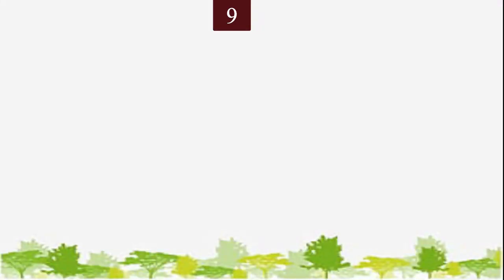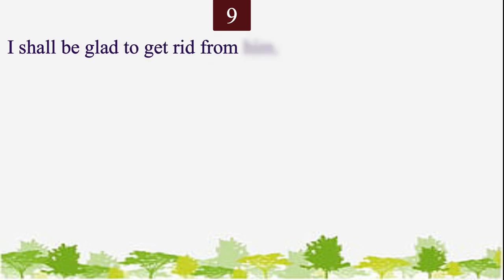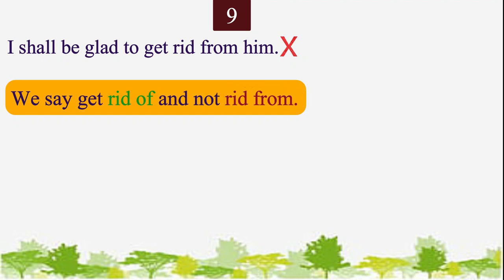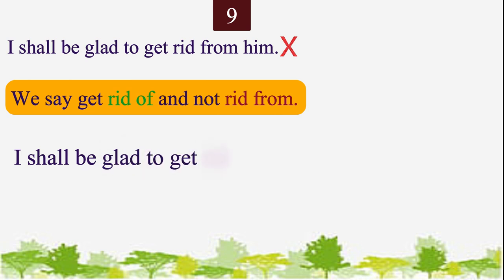Number 9 is: I shall be glad to get rid from him — this is incorrect. We say get rid of, and not rid from. Please repeat the correct sentence after me: I shall be glad to get rid of him.